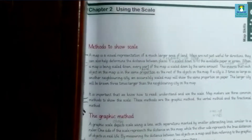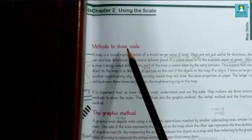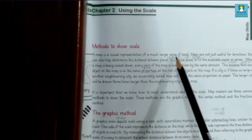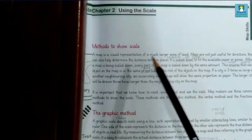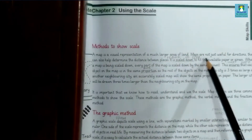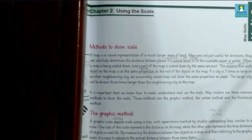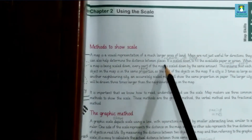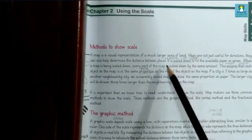A map is a visual representation — visual means which can be seen with the naked eye — of a much larger area of land. Maps are not just useful for directions; they can also help to determine the distance between places, like how far apart two places are.